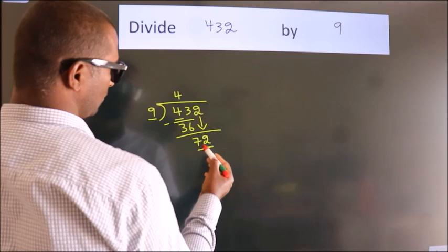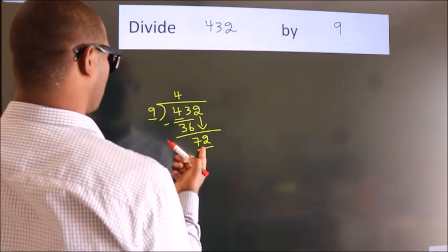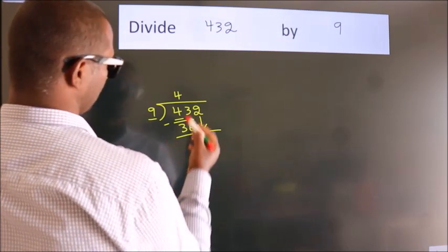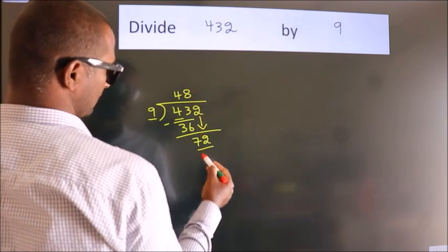So, 72. When do we get 72? In 9 table, 9 eights 72.